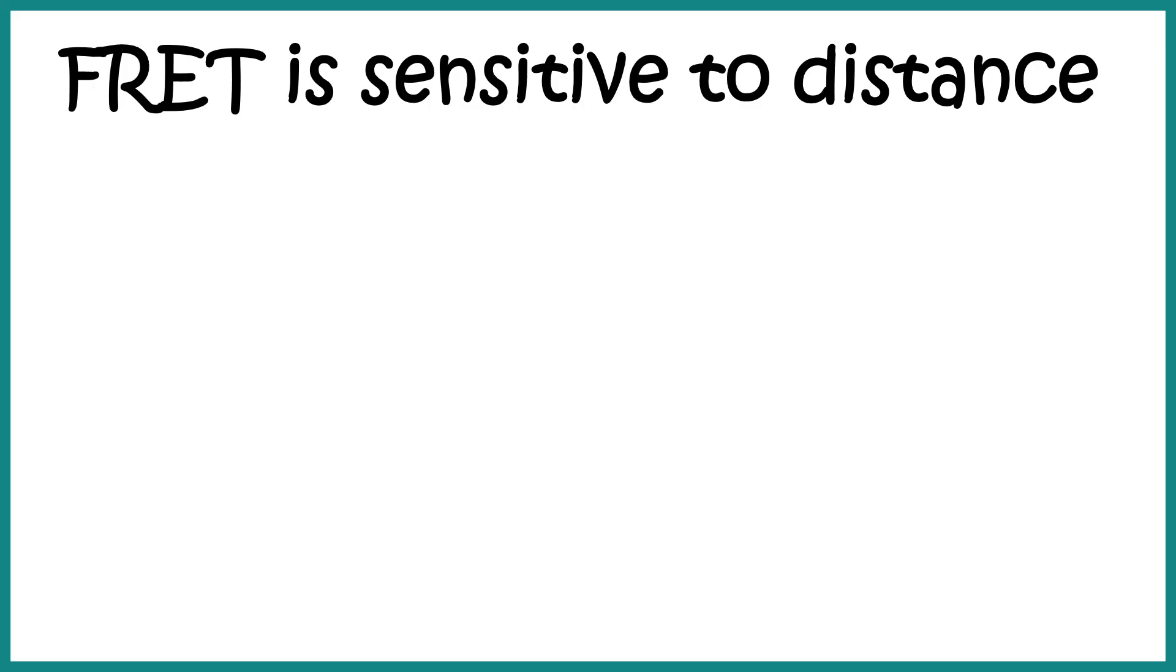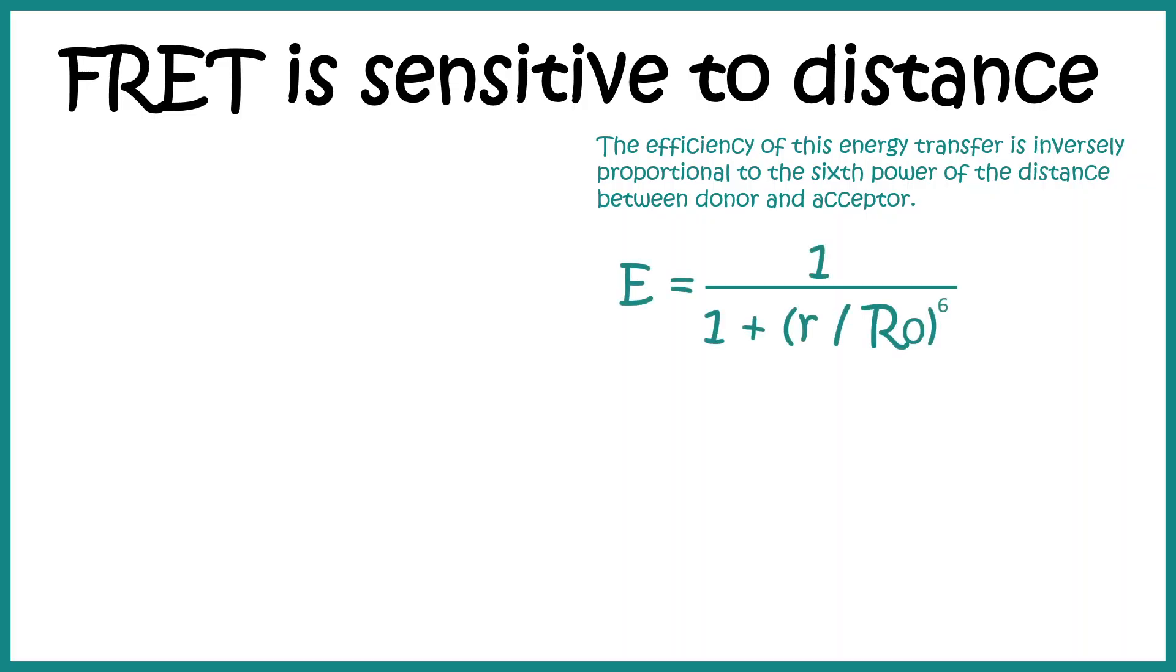Let's understand the key factors that help in the process of FRET. FRET is a function of distance. If the distance increases, FRET would not happen. The efficiency of FRET can be expressed by this formula: E equals 1 over 1 plus r by R0 to the sixth power, where small r is the distance between two fluorophore molecules, and R0 is a characteristic distance where the FRET efficiency is 50 percent. It's also a function of what type of FRET sensors or fluorophore couples we are using.